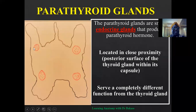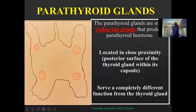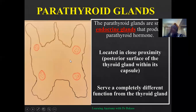This is the thyroid gland and these are the parathyroid glands, located at its posterior surface. They are usually four in number, though in some instances there may be more. We have two arranged at the upper region and two at the lower region. The ones at the upper region are referred to as the superior parathyroid gland, and these are the inferior parathyroid glands. This gland is attached at the posterior part of the thyroid gland and is covered with the capsule of the thyroid gland.